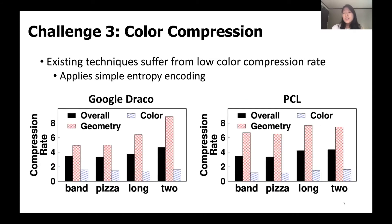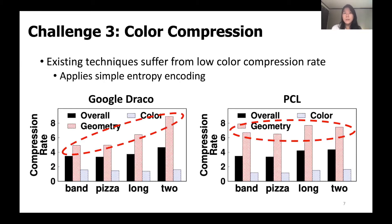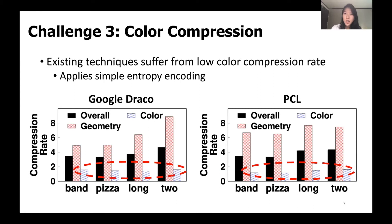Another challenge was the low color compression rate. Google Draco and Point Cloud Library both focus mainly on compressing the geometry, which could reduce the data size by 6 to 8 times. However, for color compression, the data size was reduced by only 1.5 times, which dropped the overall compression rate to 3 to 4.